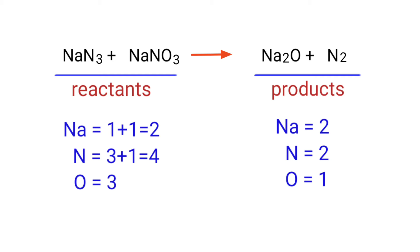The number of atoms are not balanced on both sides. To balance the chemical equation, we need to make use of coefficients. A coefficient is a number that we place in front of a chemical formula.